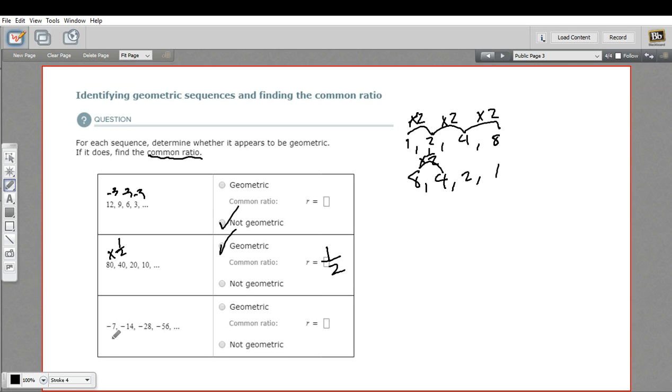Let's try this next one. We have negative 7, negative 14, negative 28, negative 56. So it looks like every step, we're multiplying by 2 to get the next item in the sequence. So that is geometric, multiplication. And our value for r, the common ratio, is 2. So that's how to identify a geometric sequence and then find the common ratio.